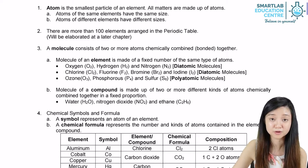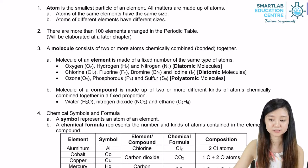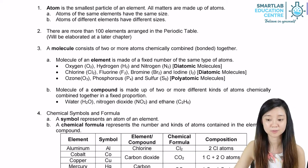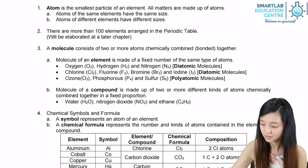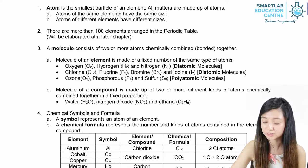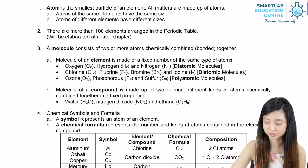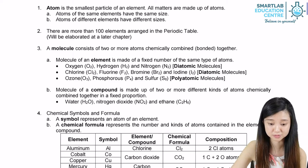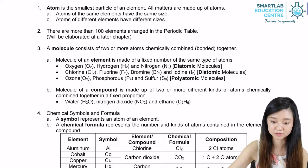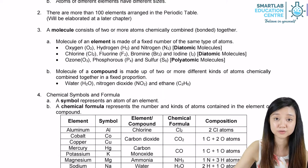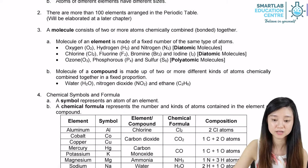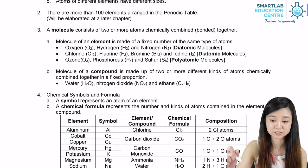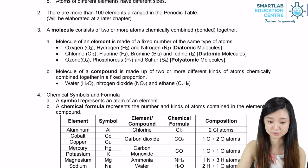For a molecule, on the other hand, it consists of two or more atoms chemically combined together. The group of atoms can consist of either the same type of atoms or different types of atoms. If it's a molecule of an element, it will be made up of a fixed number of the same type of atoms.